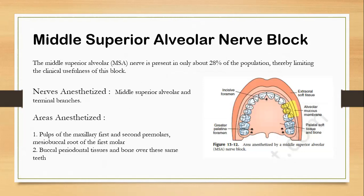The middle superior alveolar nerve block — the MSA nerve — is only present in 28% of the population. As mentioned, the mesiobuccal root of the first molar is not supplied by the PSA nerve block in 28% of the population; in those cases, the mesiobuccal root is supplied by the middle superior alveolar nerve. We give this block for that root when extracting tooth 6, but for tooth 7 or 8, the PSA block will work.